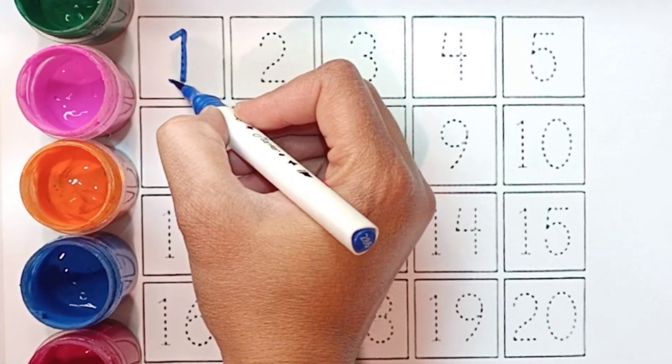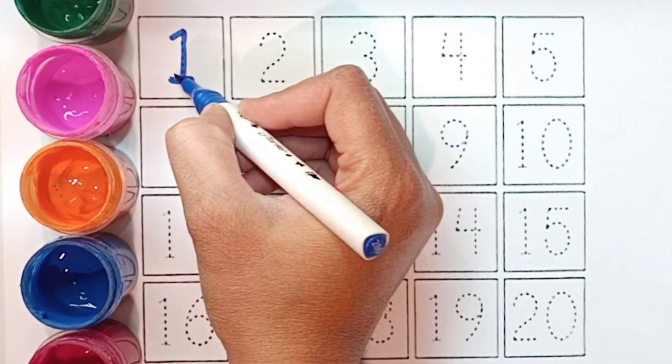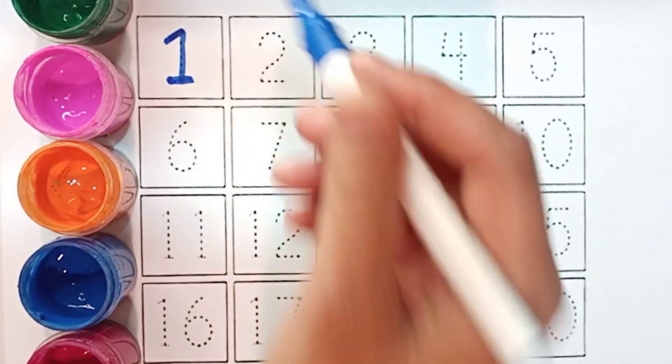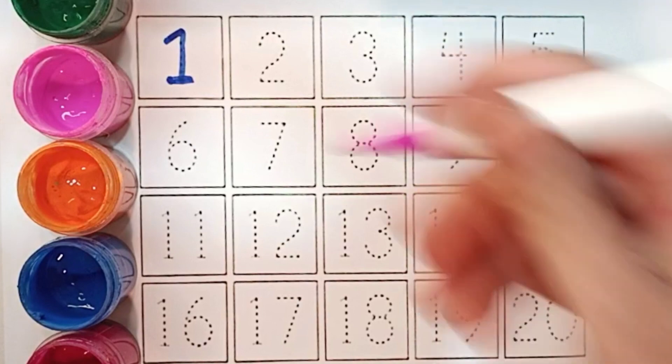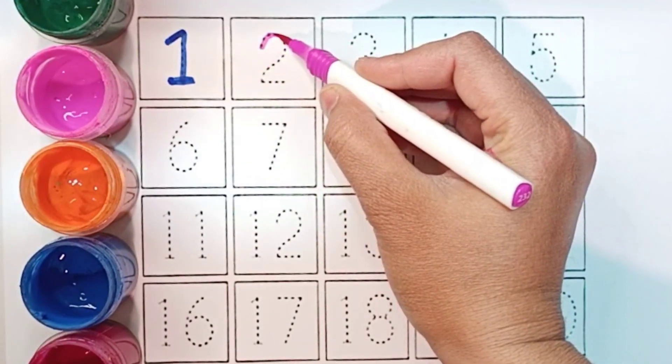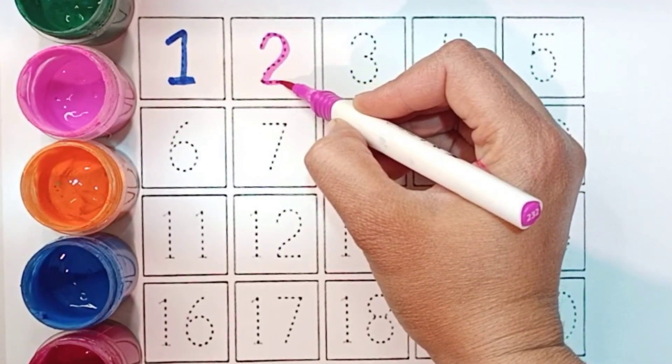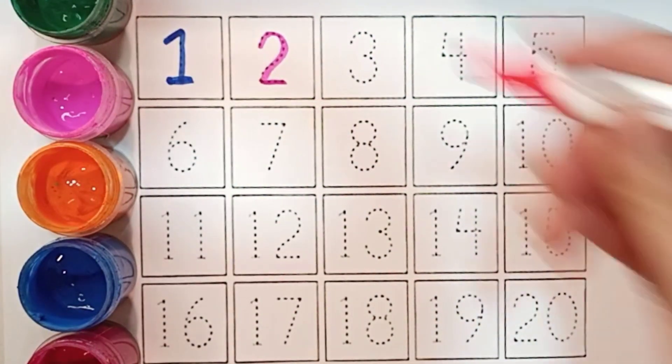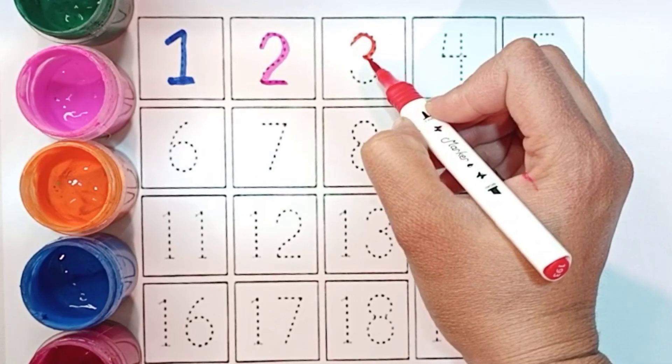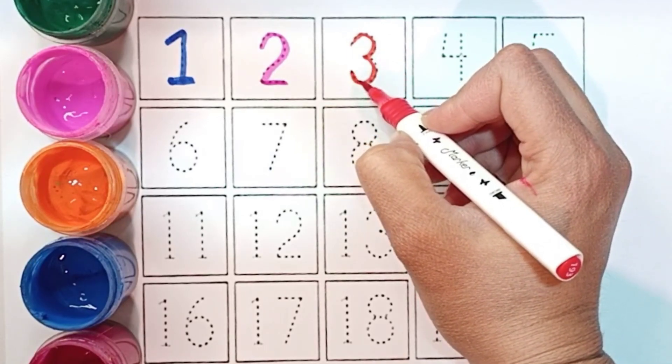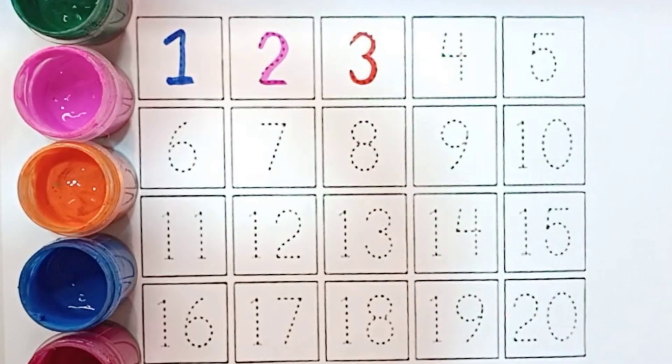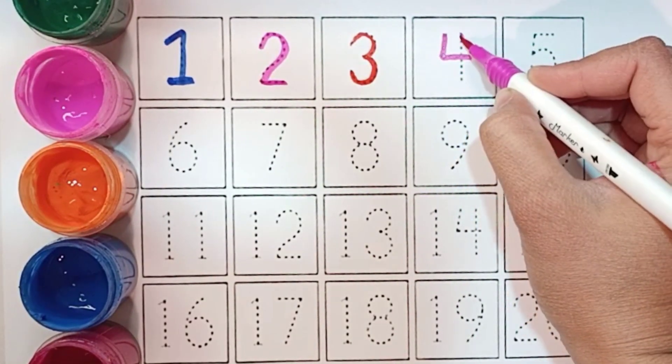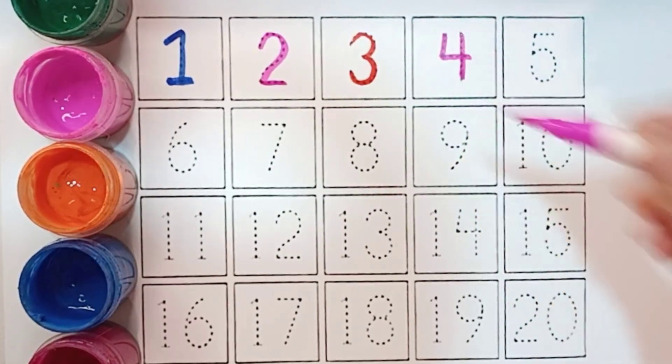Number 1. Ye hai number 1. O-N-E, 1. Number 2. T-W-O, 2. Number 3. T-H-R-E-E, 3. Number 4. F-O-U-R, 4.